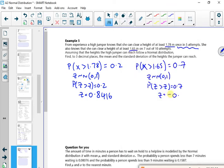So minus 0.5244. Use my Z equals X minus mu over sigma. So 0.8416, the X value is 1.78, minus mu over sigma. Then same for this one.